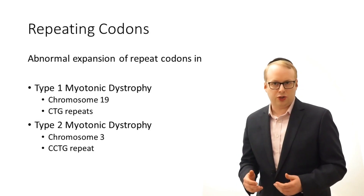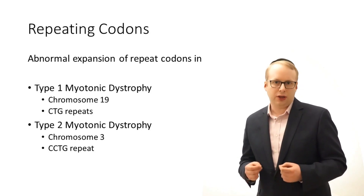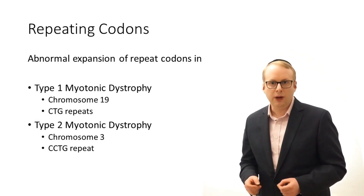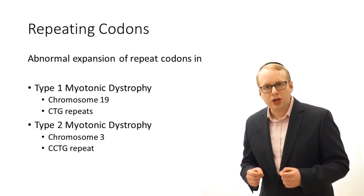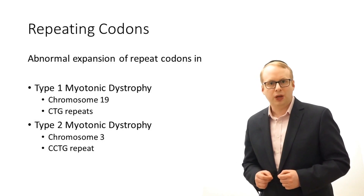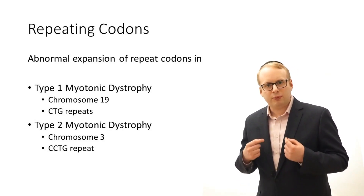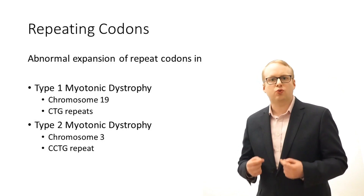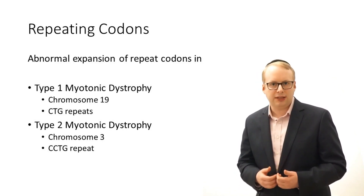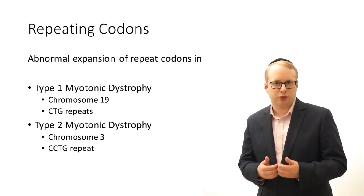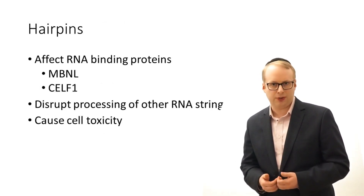In myotonic dystrophy type 1, there is a gain of extra CTG codes on the 19th chromosome, and in type 2 there is a gain of CCTG codes on the third chromosome. They are both located in non-coding exon regions; however their very presence disrupts the editing process and so the faulty RNA cannot be translated into useful protein. It also aggregates into clusters called hairpins.